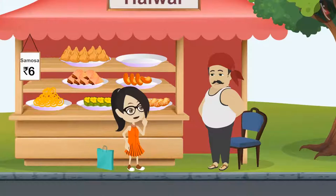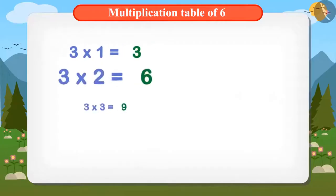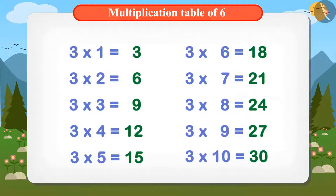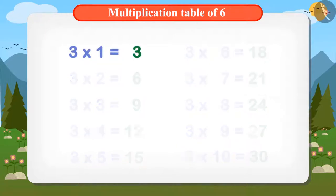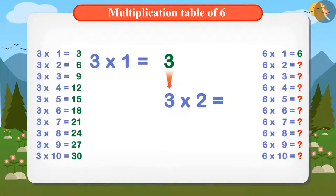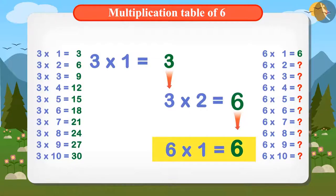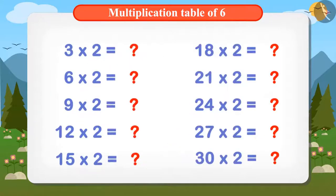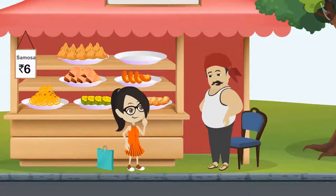Vandana asks: "How can I find out the table of six from the table of three?" Chaggu explains: "See, this is the multiplication table of three. If you multiply two with each answer in the table of three, you get the corresponding answer in the table of six. Similarly, multiplying all the answers from the table of three by two gives the complete multiplication table of six. By this method, you can find out the table of six and calculate the amount to be paid for eight samosas."